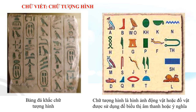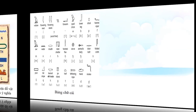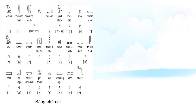Ví dụ như hình ảnh nước gần sóng thể hiện cho âm của chữ KN, hoặc là hình ảnh của một đoạn dây thừng thể hiện cho âm của chữ TH. Đây là hình ảnh một bàn tay thể hiện cho âm tiết của chữ D. Đây là bảng chữ cái trong hệ thống chữ tượng hình của người Ai Cập cổ đại.